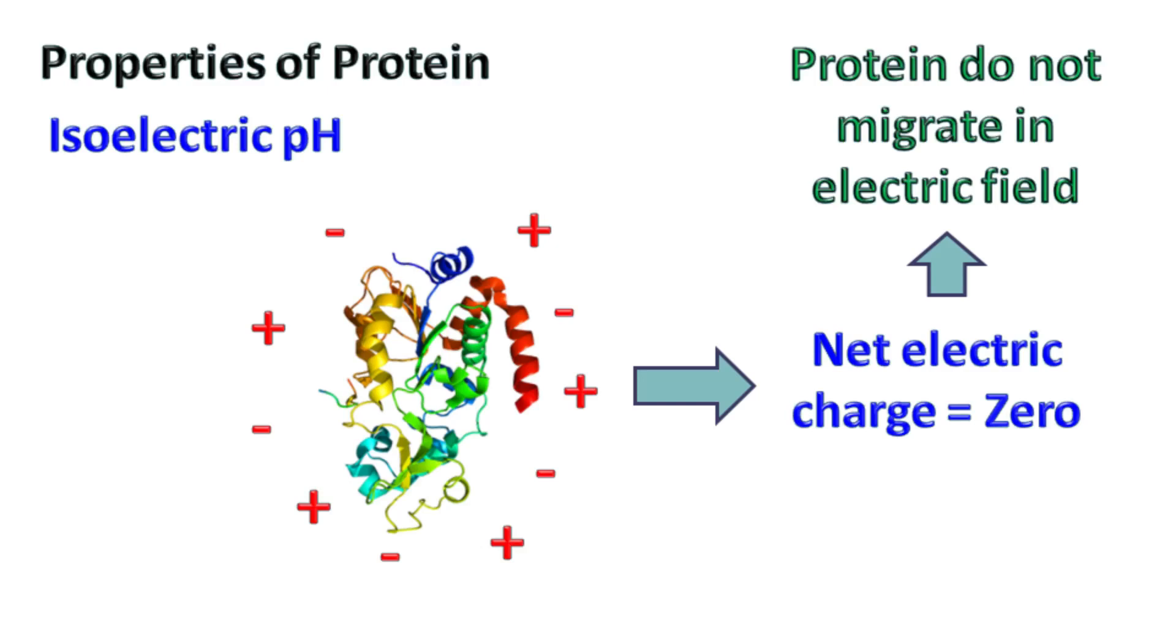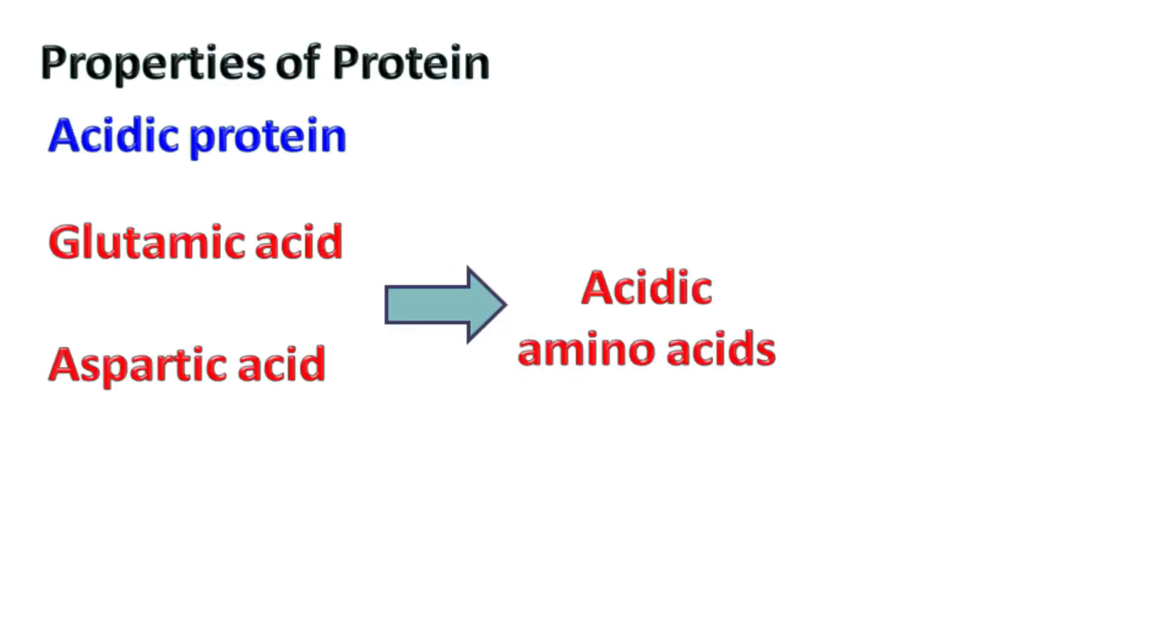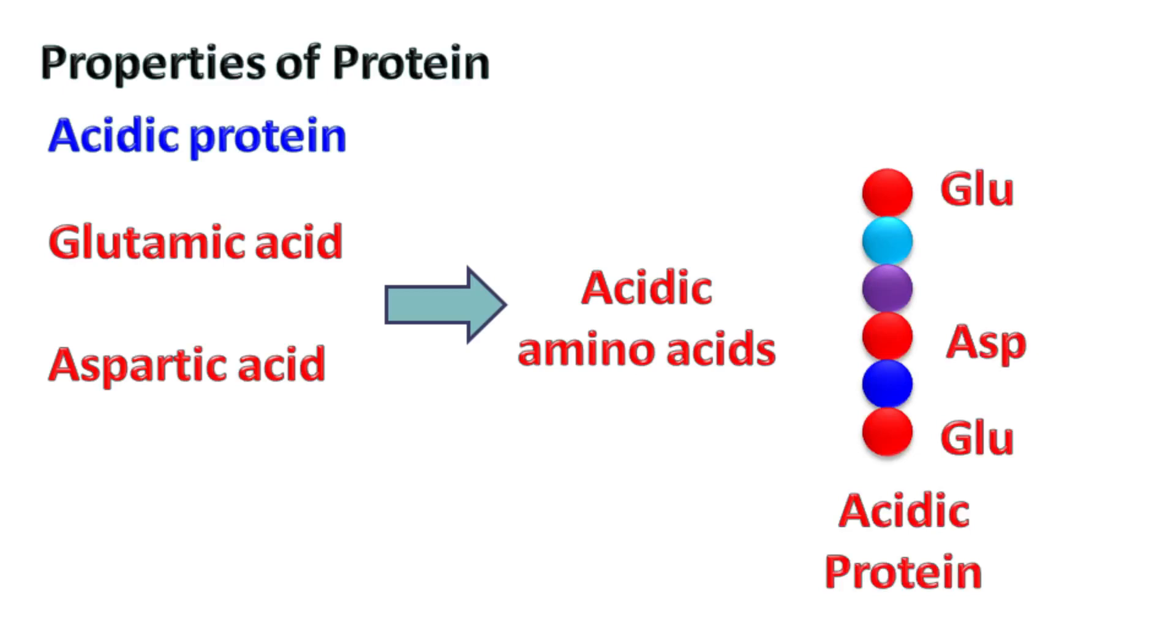Acidic proteins: if the proteins have more number of acidic amino acids such as glutamic acid and aspartic acid, then the protein is acidic.